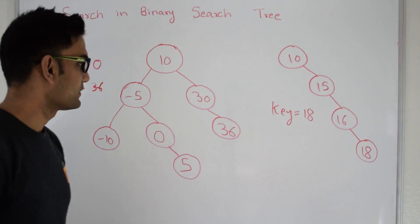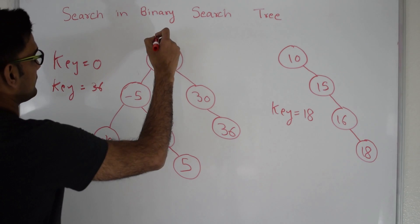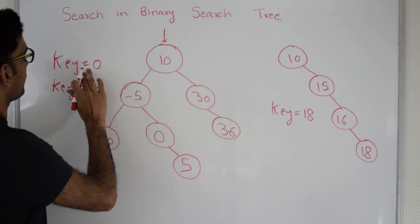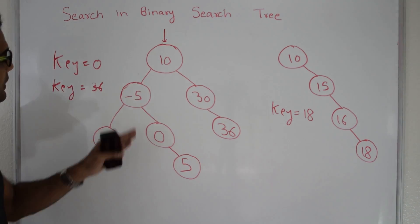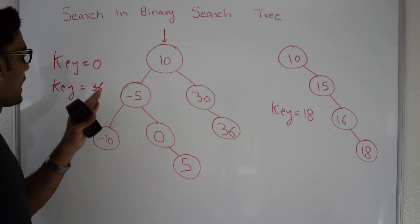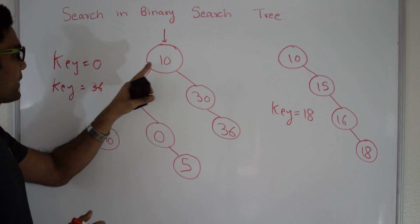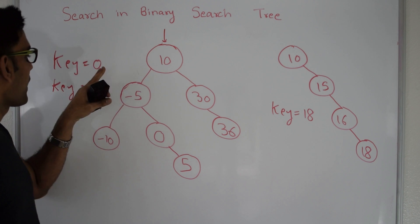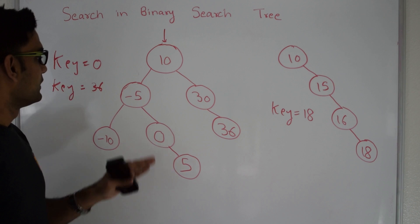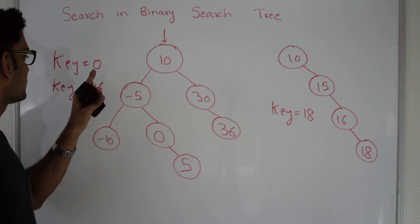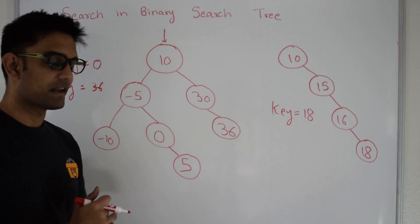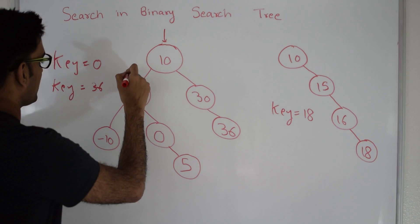So how do we search in a binary search tree? If I'm searching for key 0, I start from the root node. First I compare if the root node value is same as 0 — it's not. So I know that 0 is less than 10, so we go on the left side of 10 and we reach the next node.